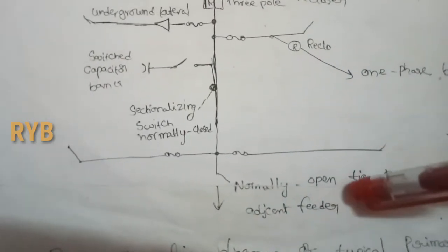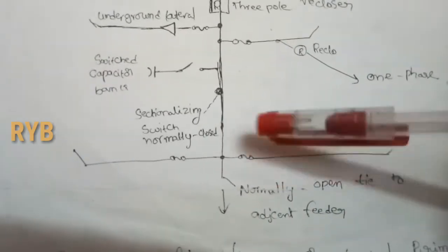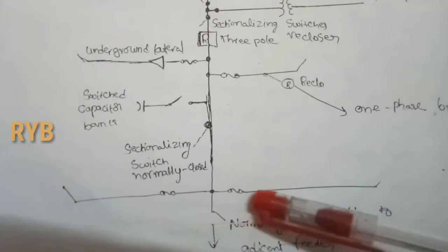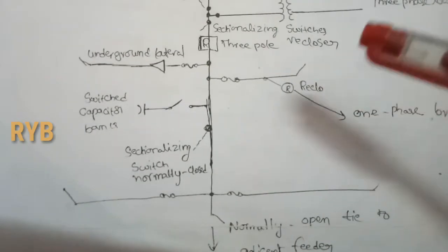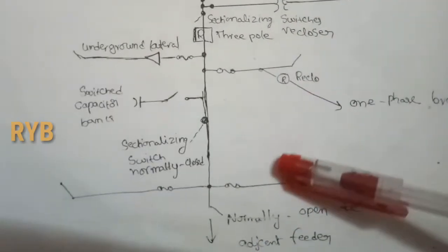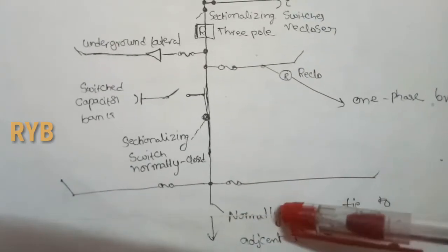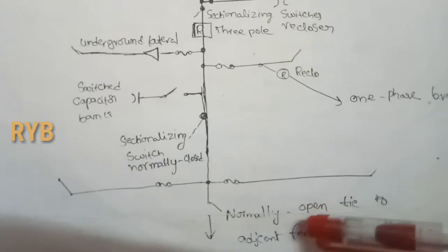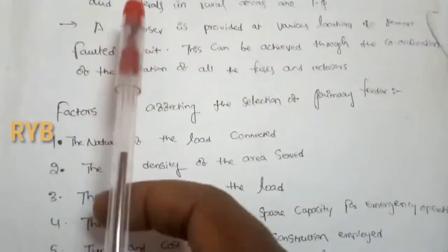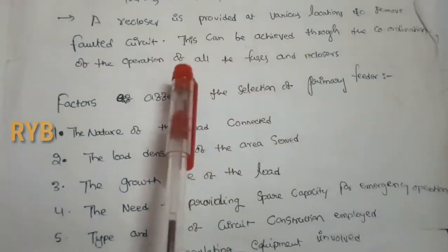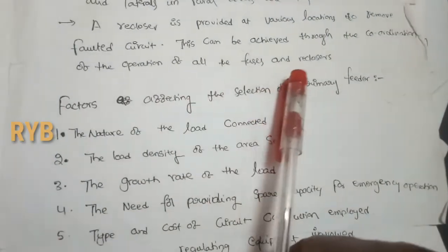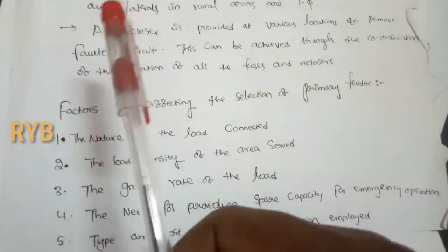A tie switch is a switch that connects an adjacent feeder from another feeder; it is normally open. Sectionalizing switches are normally closed. Tie switches are used to connect bus couplers and for emergency feeder connections — they are normally open under regular operating conditions. A recloser is provided at various locations to remove the faulted section, and this is achieved through coordination of the operation of all fuses and reclosers.